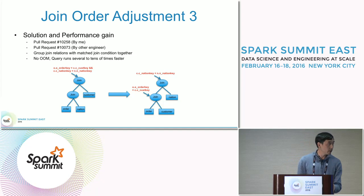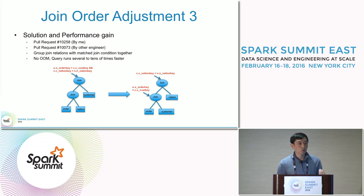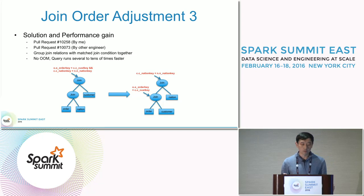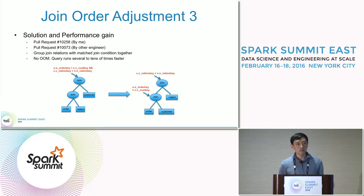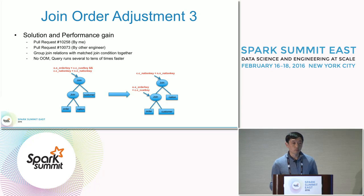To resolve this, we need to regroup the join order based on the predicates. For this example, using the first condition linking orders (O) and customers (C), we group the orders table and customer table together, placing the nation table on the right side. After this optimization, we no longer see out-of-memory exceptions, and the query runs several to tens of times faster. There are pull requests for this feature — one by me and one by another engineer from Databricks. As of Spark 1.5, this feature has not yet been resolved.